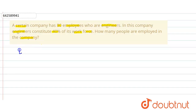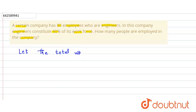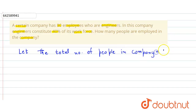First, we consider: let the total number of people employed in the company be 100x. So the total number of people in the company is equal to 100x.